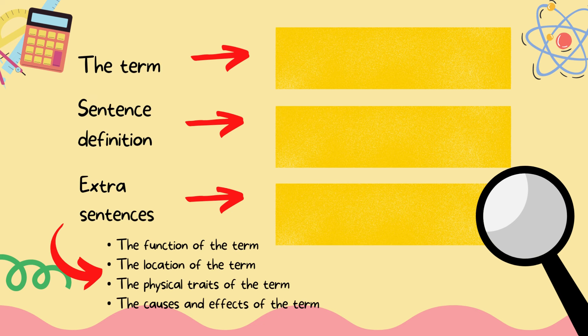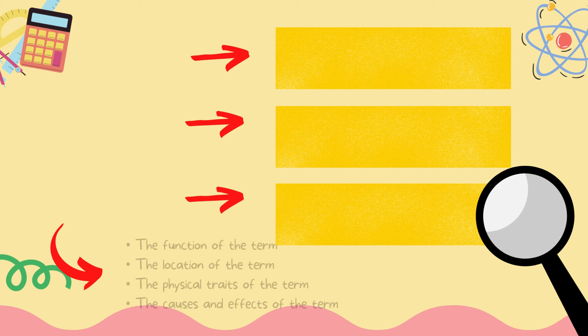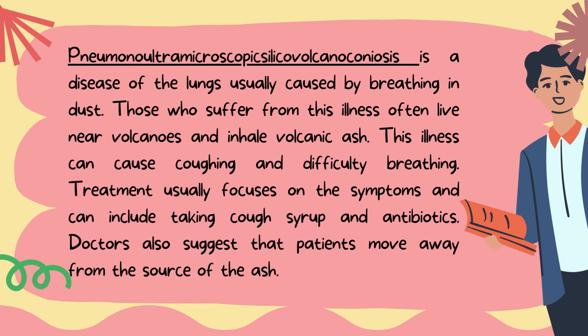So, how do we come up with a more detailed definition of a term? An extended definition nearly always begins with a sentence definition and then expands on it by offering extra sentences. Let's look at an example of extended definition.